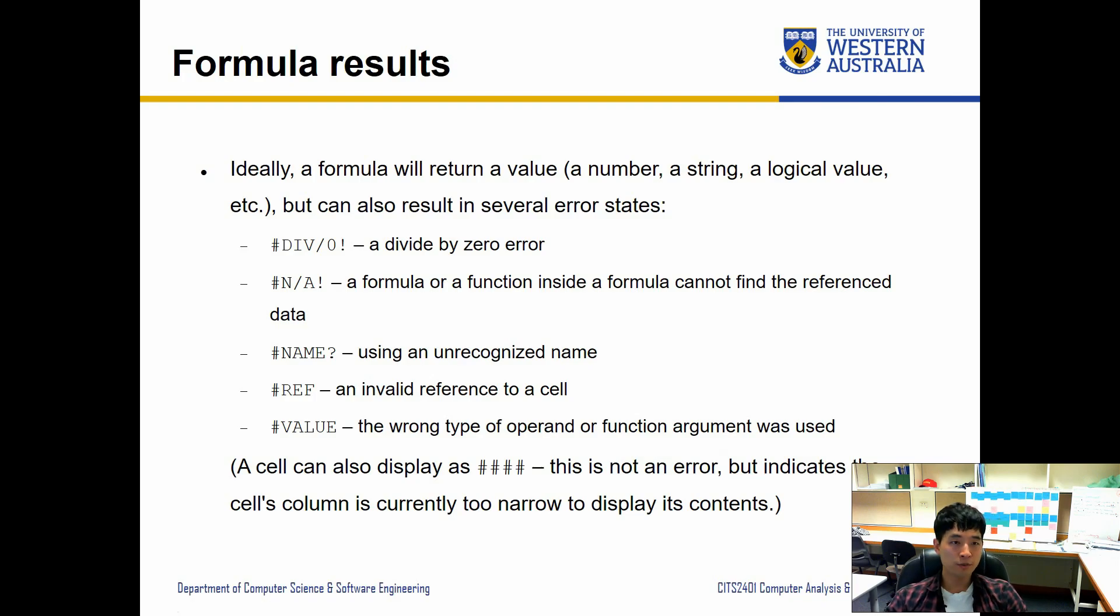So formula results: ideally it will return a value, but if it does not it will give you an error. And there are various types of errors that you may face, so let's have a look at some of the common ones. The first one is DIV/0, so this means your formula is trying to divide an equation by value zero. #N/A means a formula or function inside a formula cannot find the referenced data, so that means something is broken inside in terms of referencing.